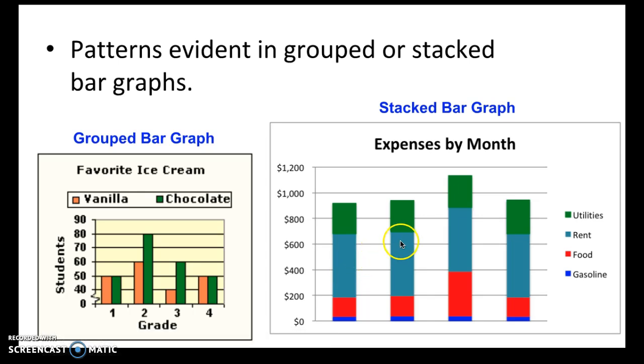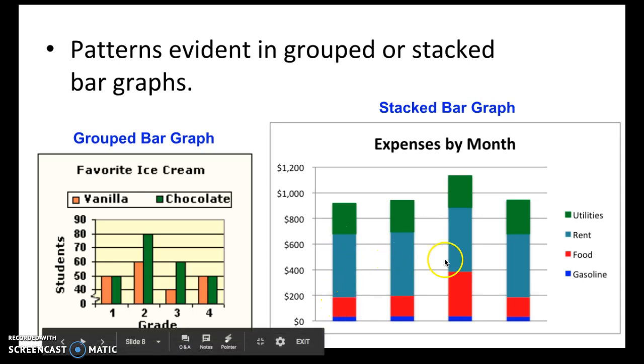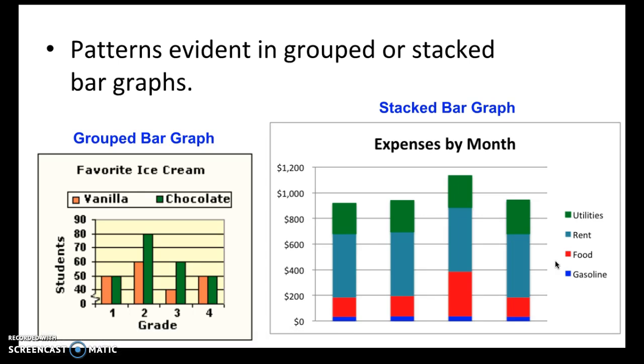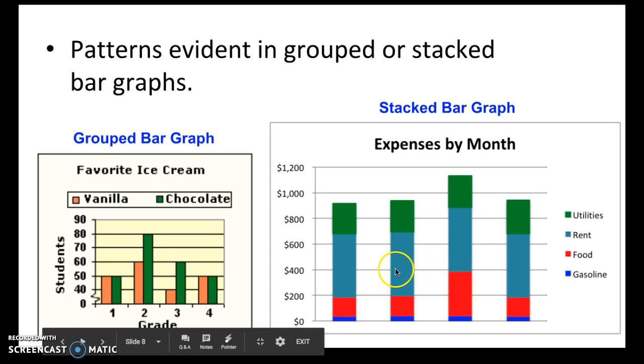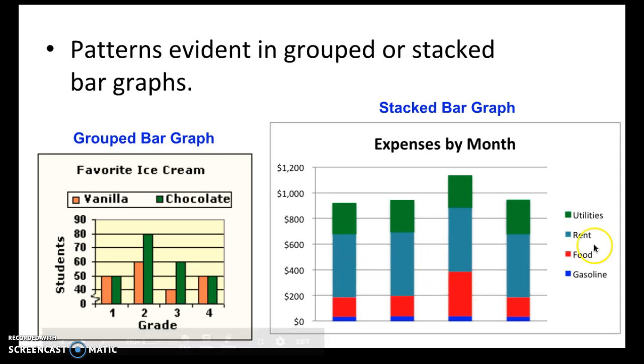As you notice, each month the person who this bar graph is representing spent more money each month on rent than any other expense. And we know this because a larger portion of each bar is dedicated to rent, which is shown here in the blue, in the light blue.